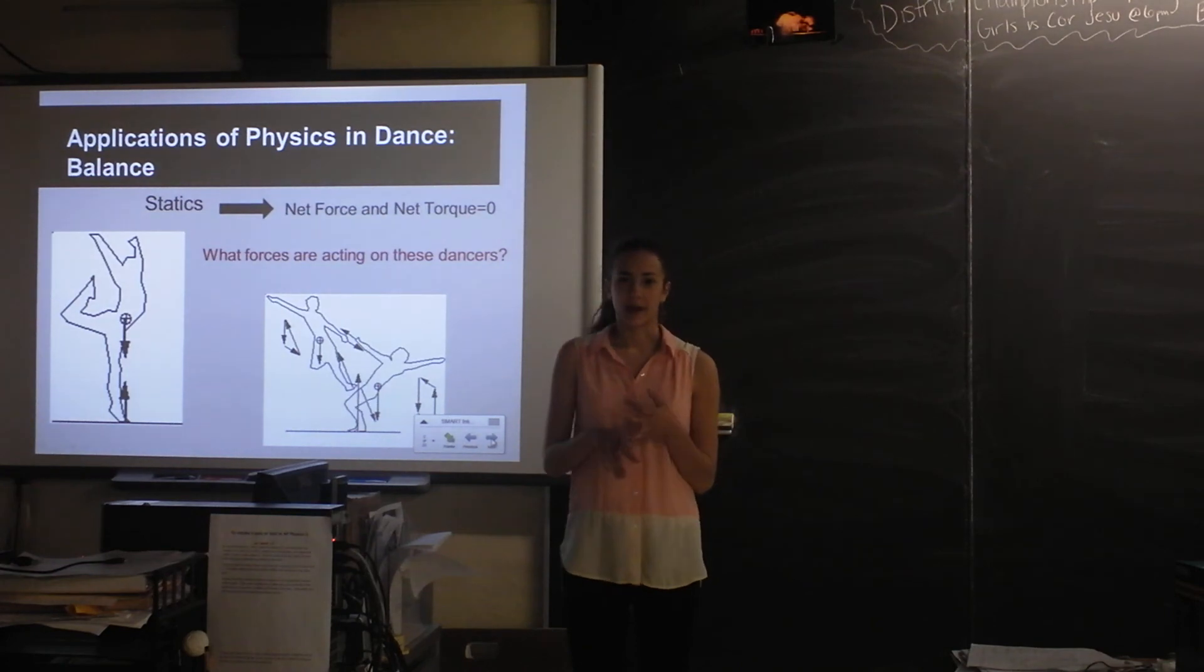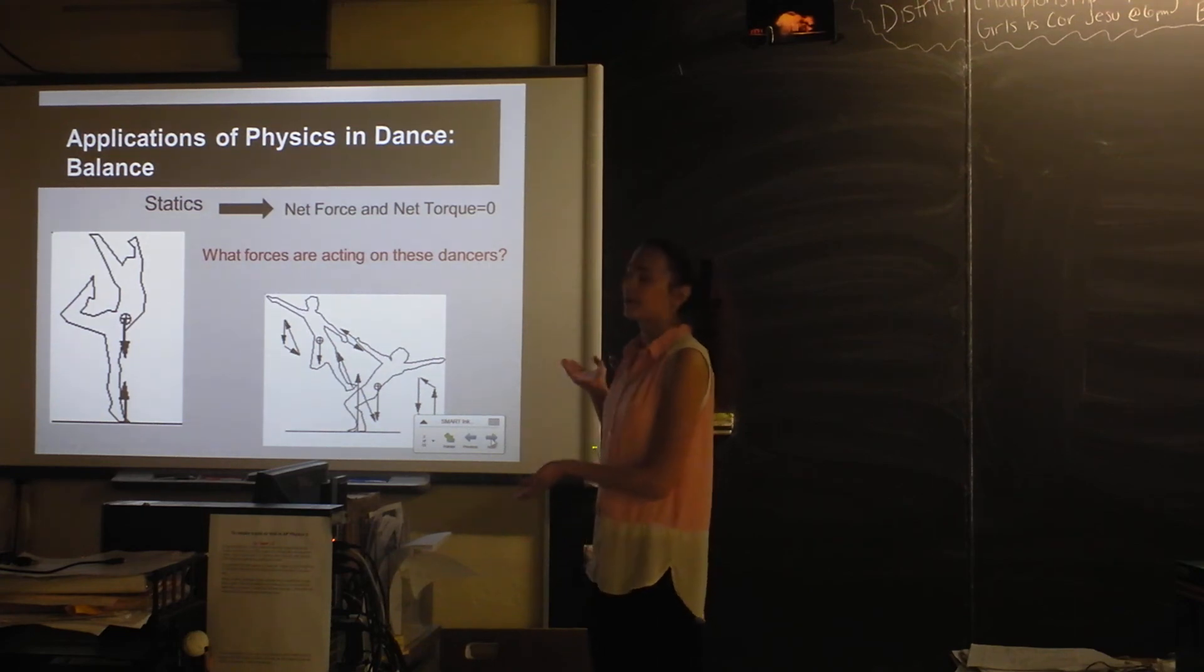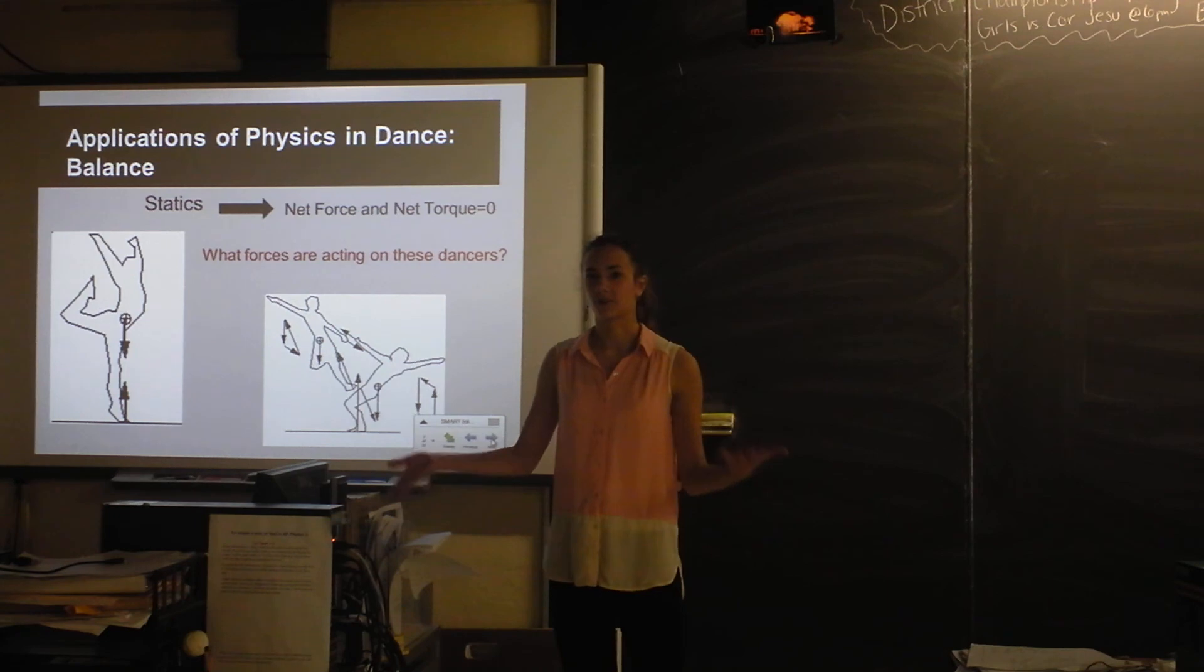The first would be in a balance, and this is just a static equilibrium problem. So that means there's no net force or net torque. So what forces would be acting on the dancers when they're balancing? Gravity, and then normal force. Depending on where those are relative to the axis of rotation would determine whether or not there's a torque on the dancer and whether or not they're able to balance.